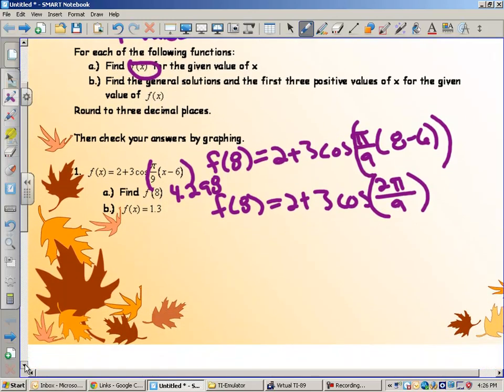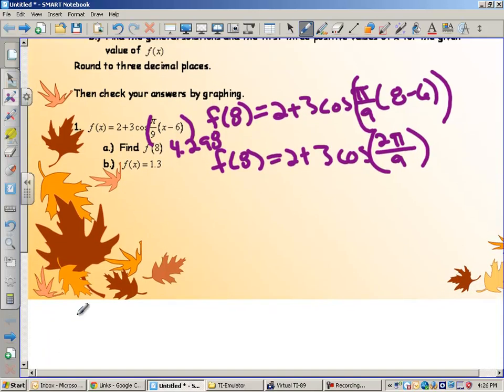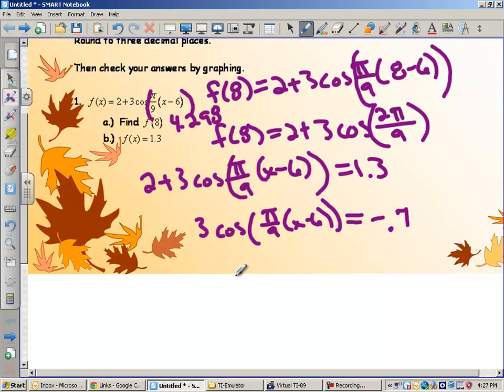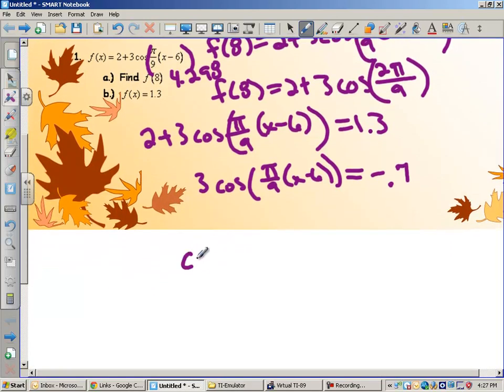Now the next part says find f of x equals 1.3. Here is our general solutions. This will be probably the most work. So we want to set f of x 2 plus 3 cosine pi over 9 times x minus 6 equal to 1.3. So here we go. We're going to solve an equation. The first thing we're going to do is subtract 2 from both sides. So that will give me 3 cosine of pi over 9 times x minus 6 equals negative 0.7. And then I'm going to divide by 3. I'm just working outside in.